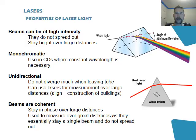Laser light is unidirectional, meaning that the laser doesn't diverge much. And the beams are coherent, meaning they stay in phase over large distances.